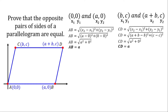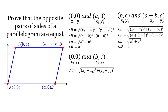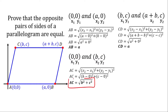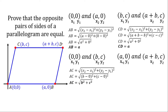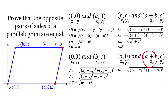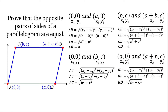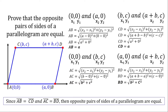For the other pair of sides, we have AC at coordinates 0,0 and B,C. Using the distance formula: B minus 0 and C minus 0. Simplifying further gives us the measurement of AC. On the other hand, for BD, using the distance formula with A plus B minus A and C minus 0, that gives us B squared plus C squared. So they have the same length. Since segment AB equals segment CD and AC equals BD, the opposite pairs of sides of the parallelogram are equal.